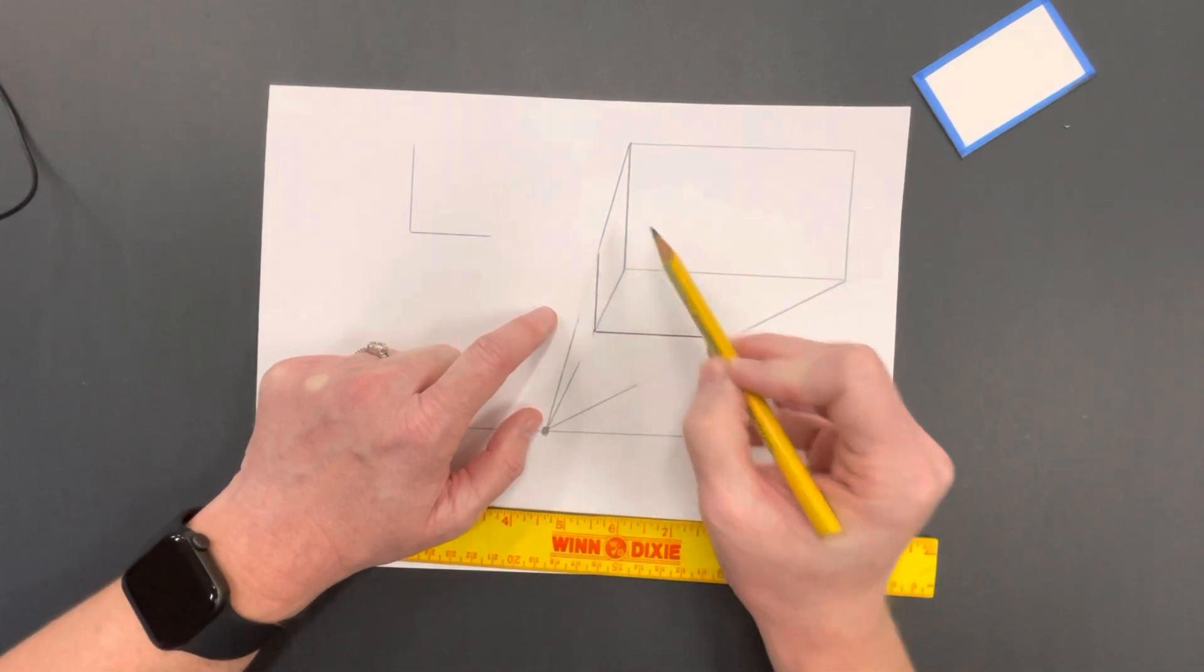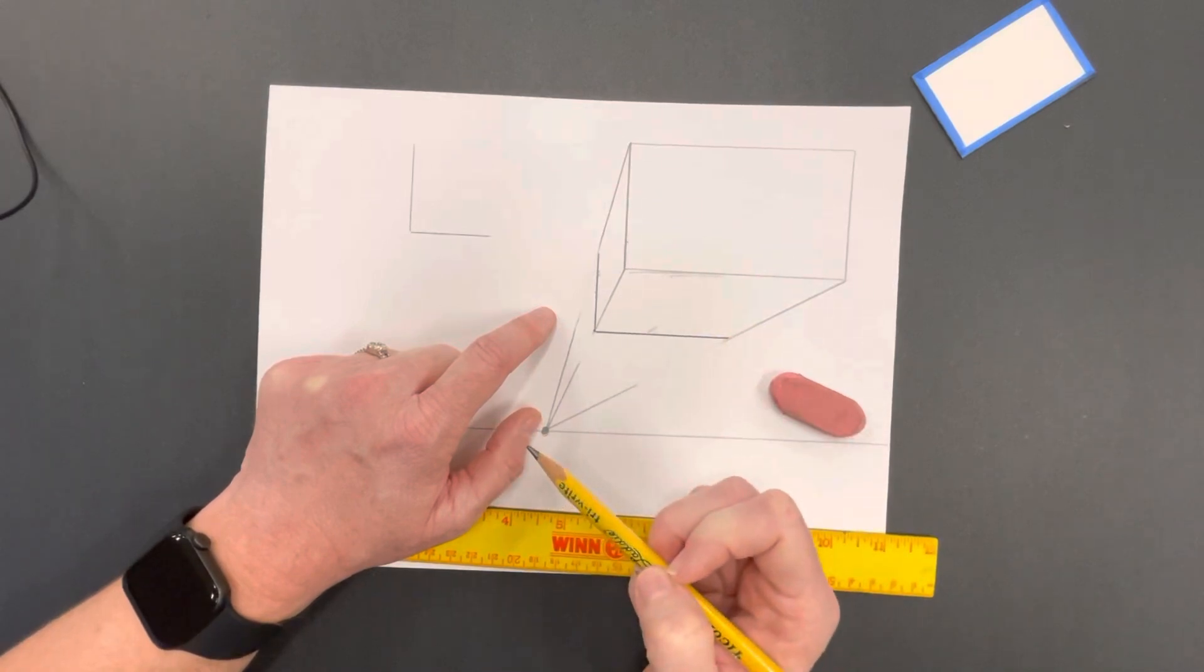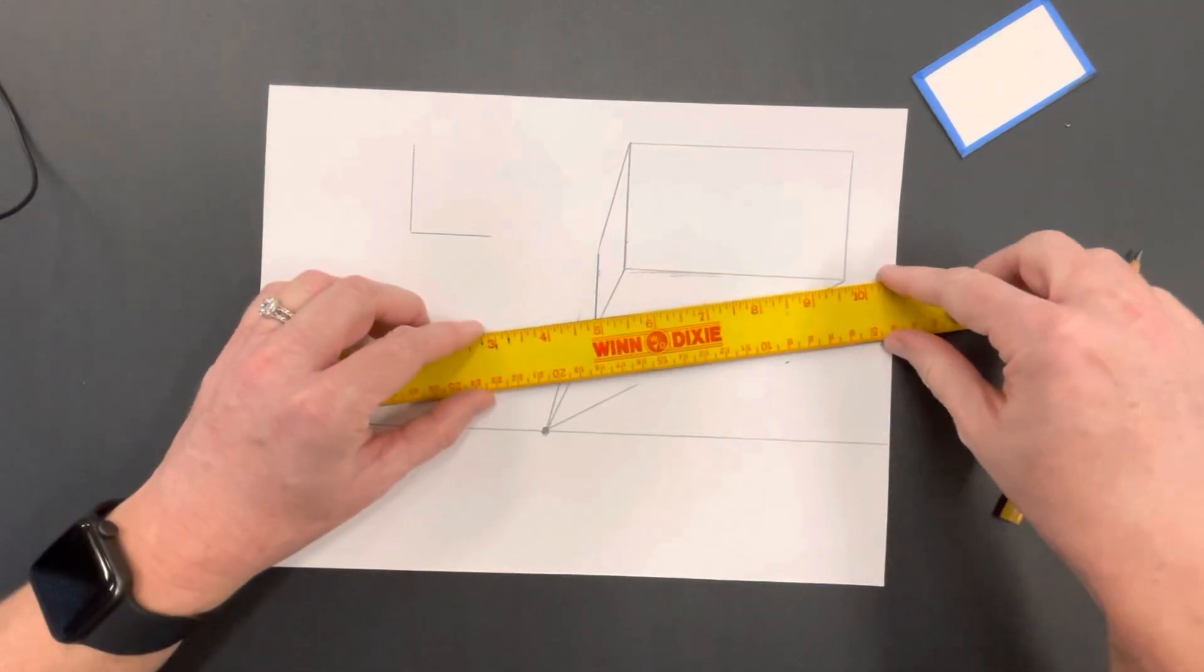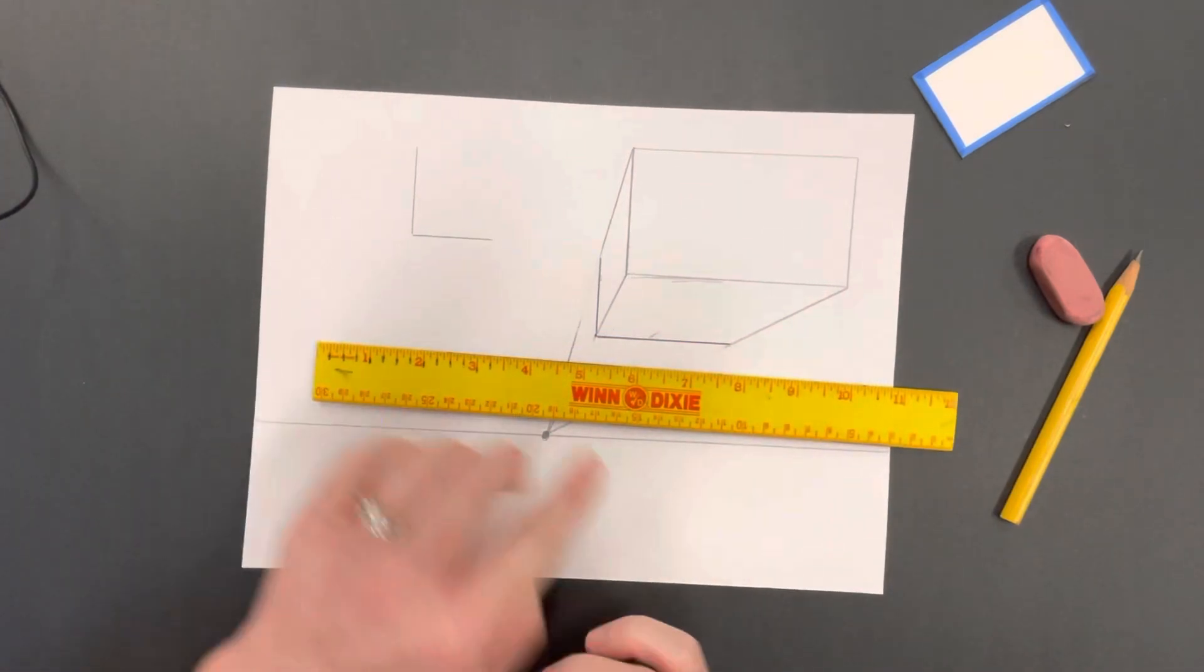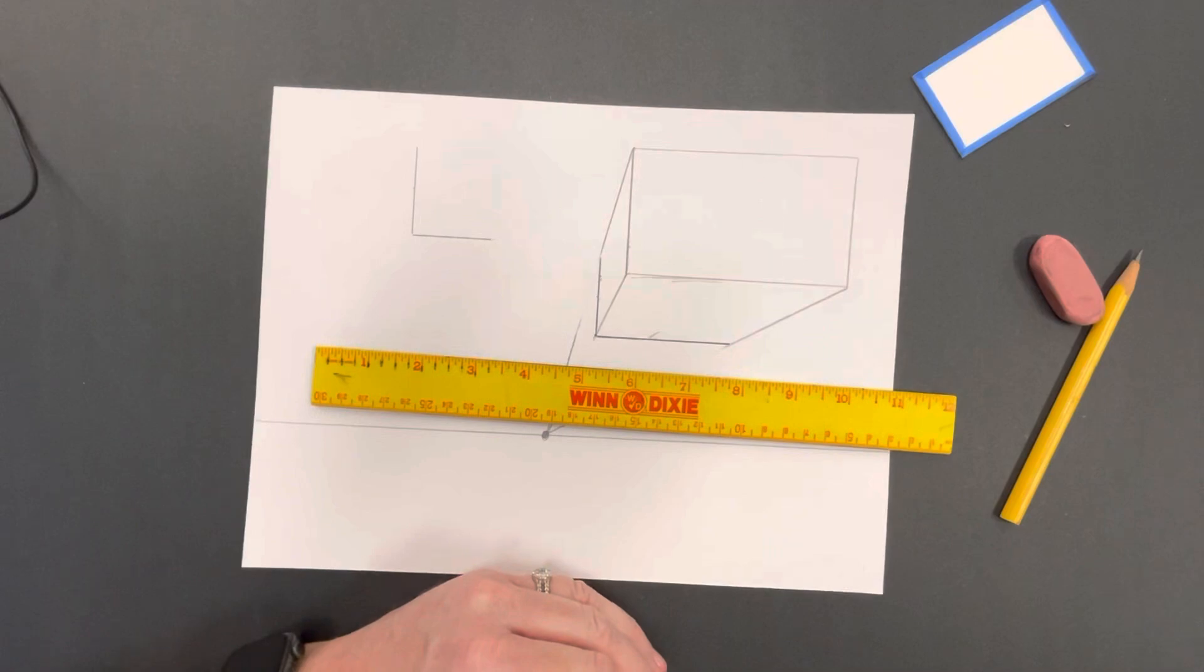Remember, parallel means they stay the same distance apart - you don't get like a weird angle, they stay exactly the same distance apart all the time. And you achieve that by doing your 90-degree angle.